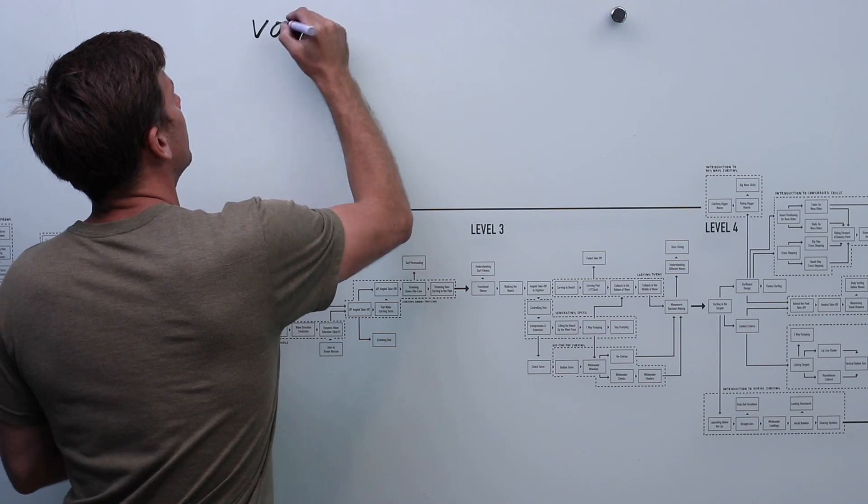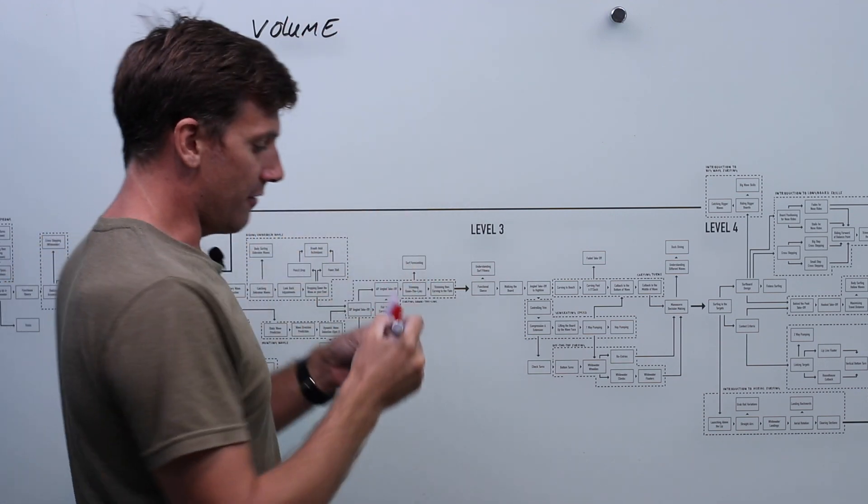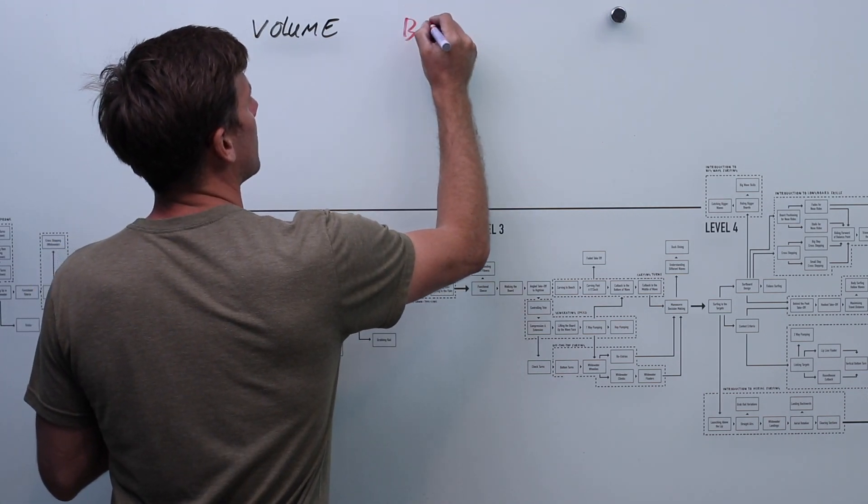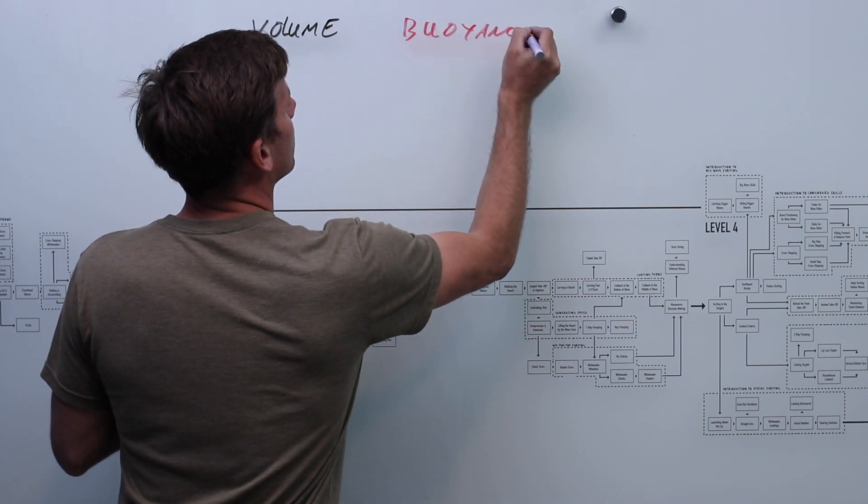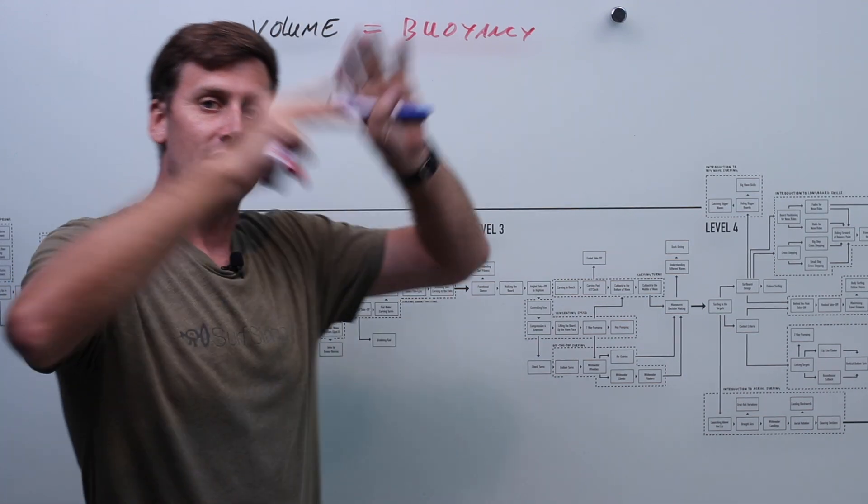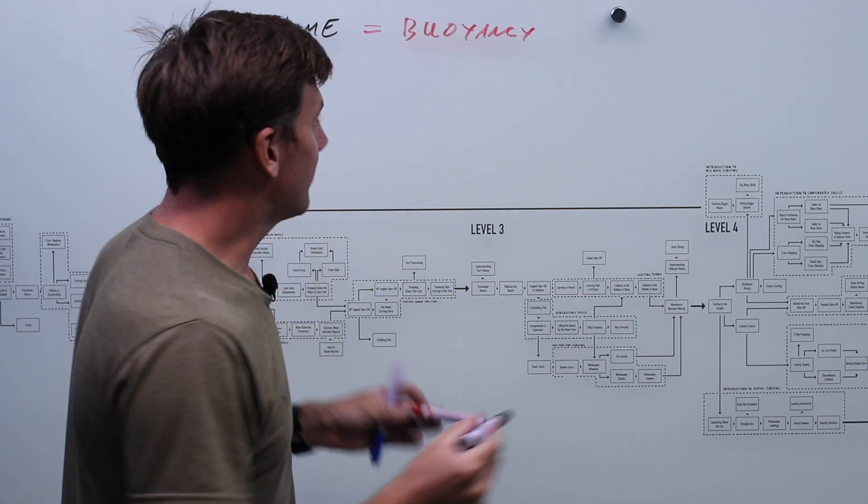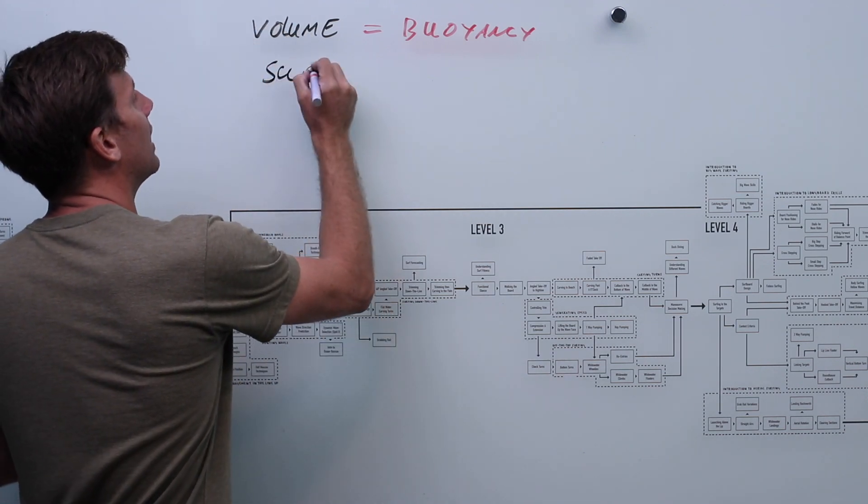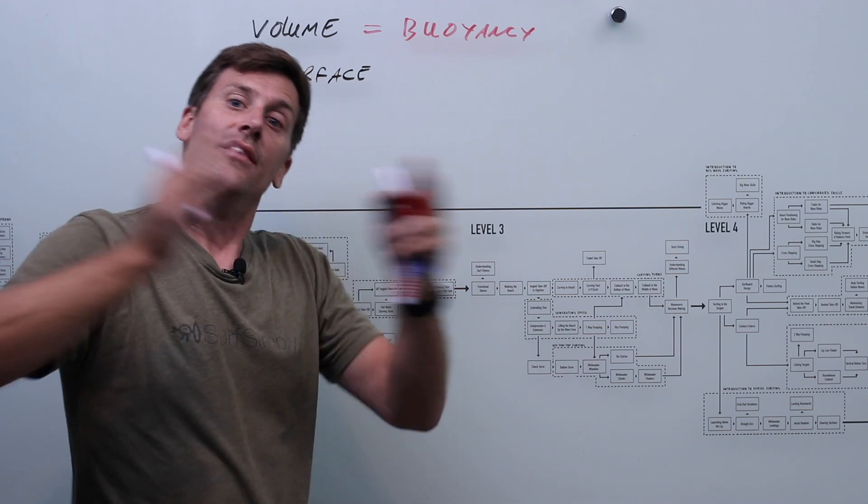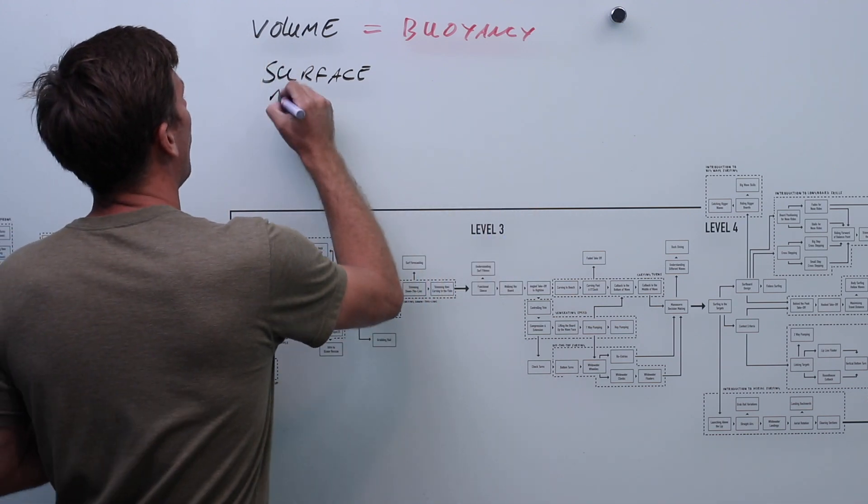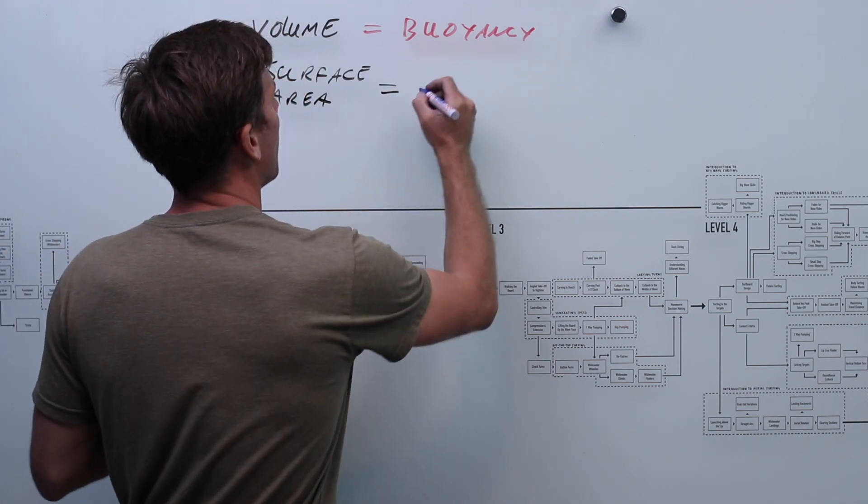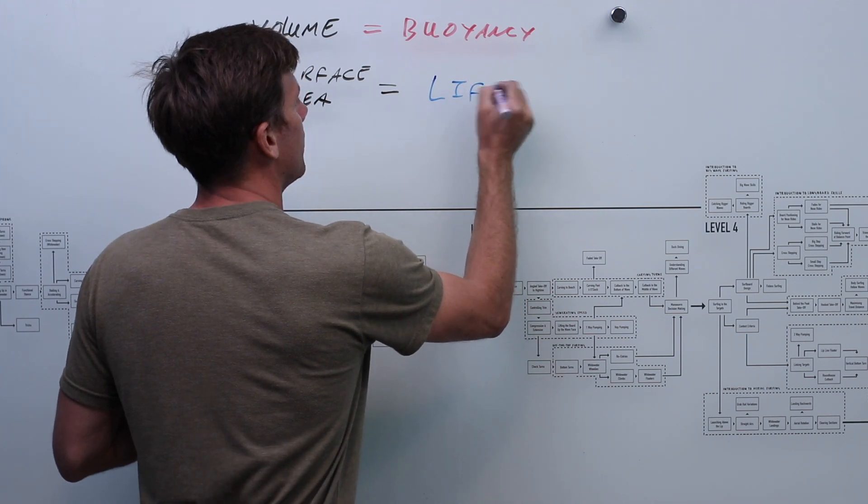So the volume of a board, get the dyslexic to do the writing. So the volume of the board we use to produce the buoyancy. Okay. Which was what we've been talking about. The surface area of the board, so where volume is 3D, the length, the width, and the thickness, the surface area. We're just talking about the 2D profile of the board, you know, just the length, the width, the shape of the board. Okay. And we're using that to produce lift. Okay. Hydrodynamic lift. All right.